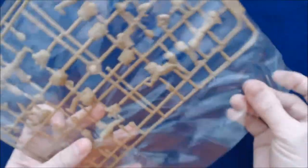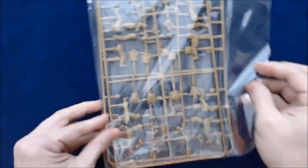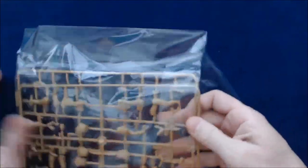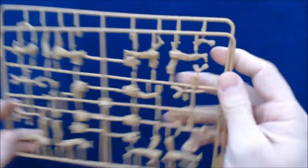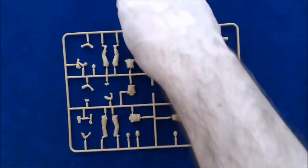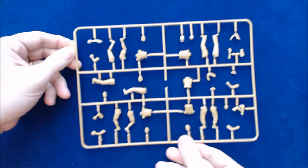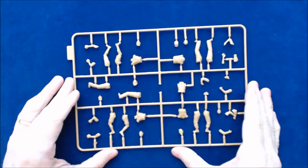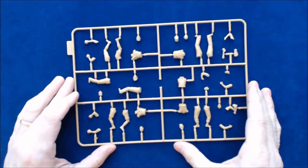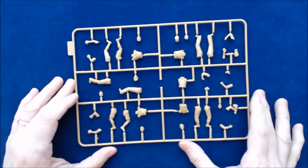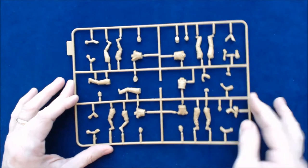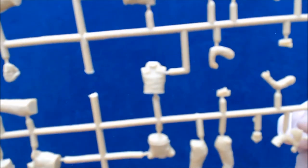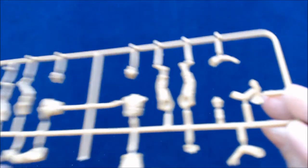It comes in one bag of two styrene sprue sets, and you can see from the first one here, the detail, I'll show you closer up here in a second. But you can see from it, it's kind of a dark beige plastic or almost like a tan. The legs are in two halves.